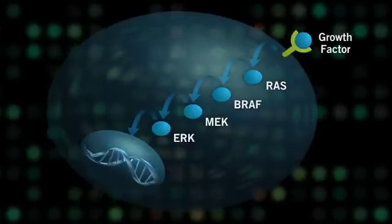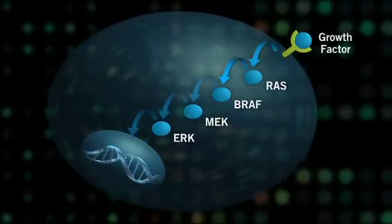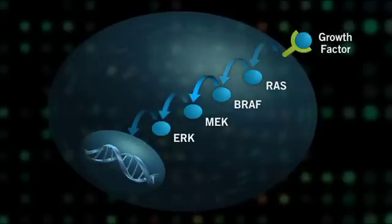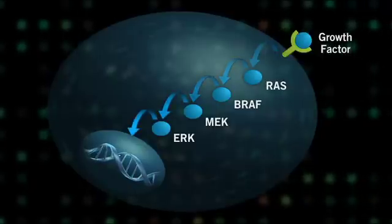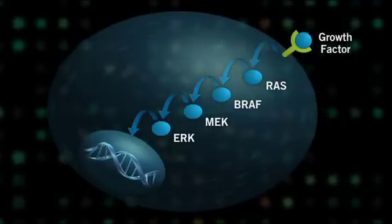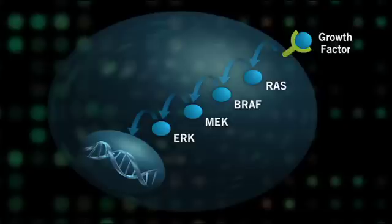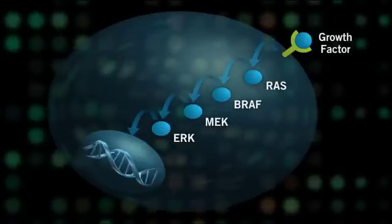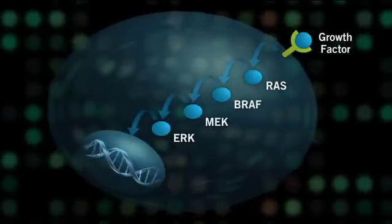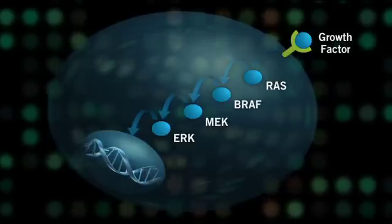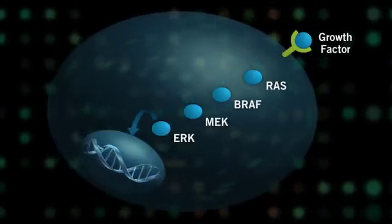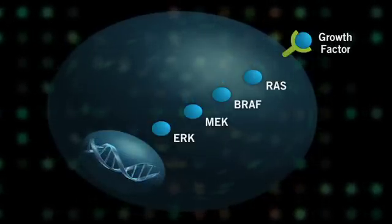After a signal is communicated from the outside of the cell, through this pathway, and into the nucleus, the proteins in the pathway are each turned off. If the pathway fails to turn off, the signal is continuously transmitted, and the cells may multiply uncontrollably.